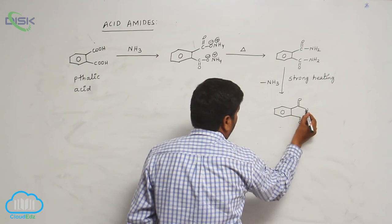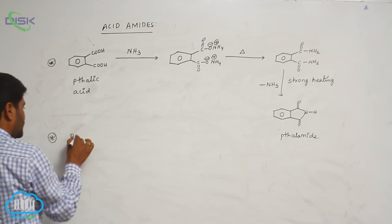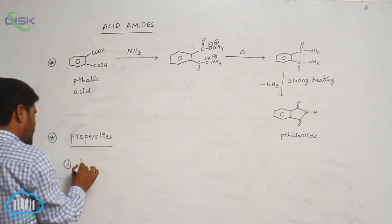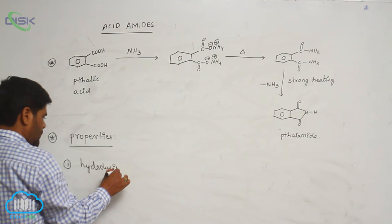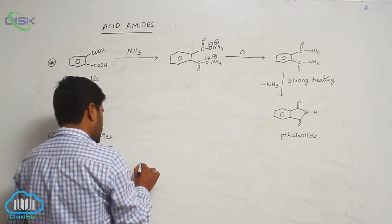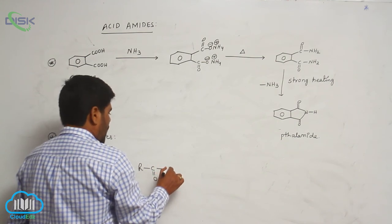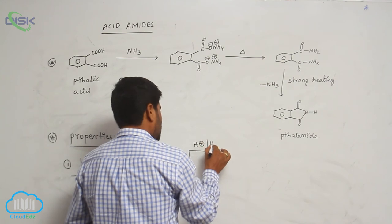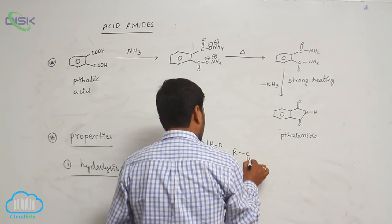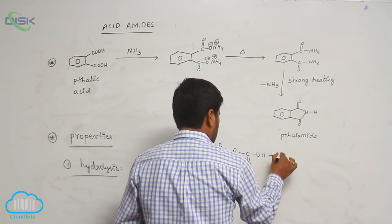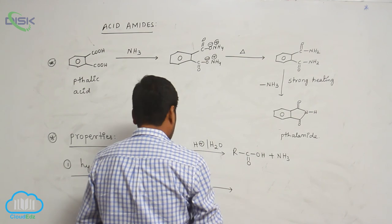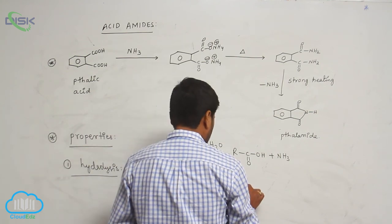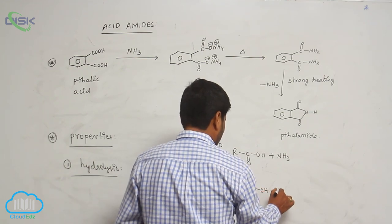Properties of amides. Number one is hydrolysis. An amide is hydrolyzed in the presence of an acid medium to form a carboxylic acid. Hydrolysis of an amide in the presence of a basic medium also forms a carboxylic acid.